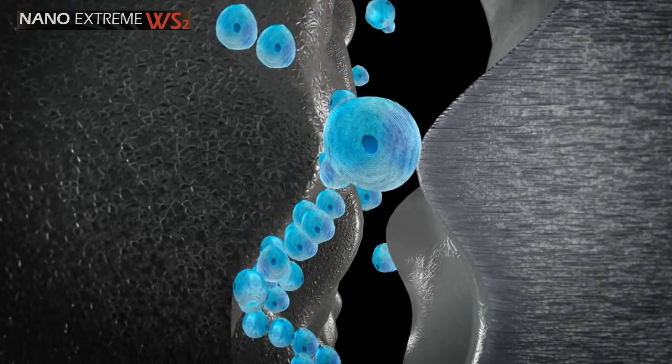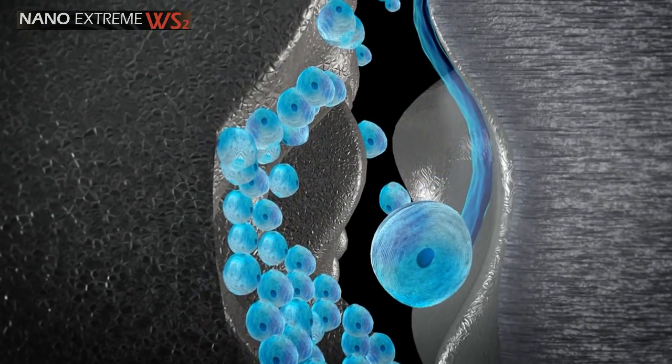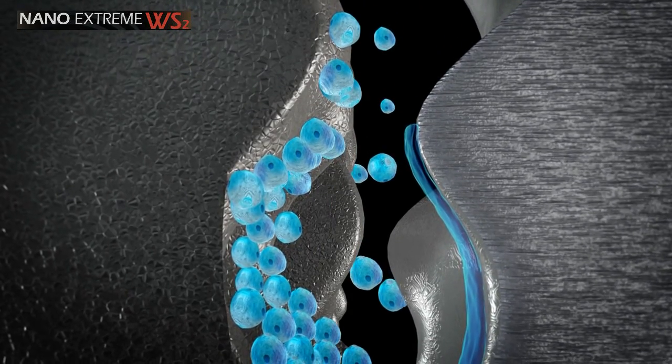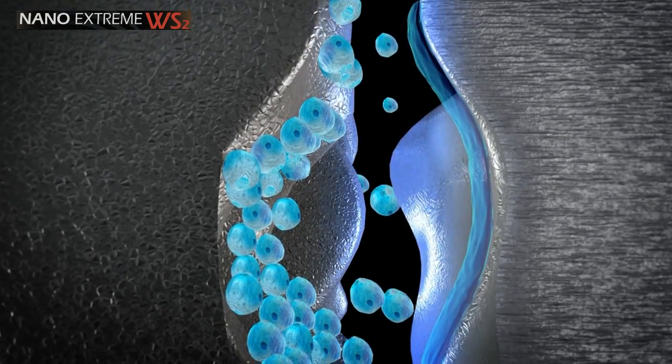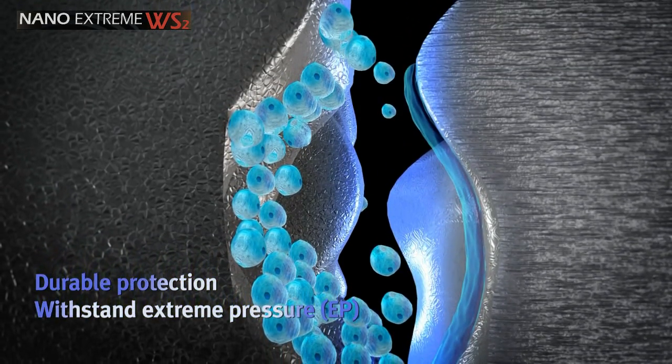Under pressure, the nano-spheres exfoliate their outer layers, creating a tribo-film layer that attaches to the contacting metal surfaces. This tribo-film lamella gives the metal durable protection and has the ability to withstand extreme pressure conditions.